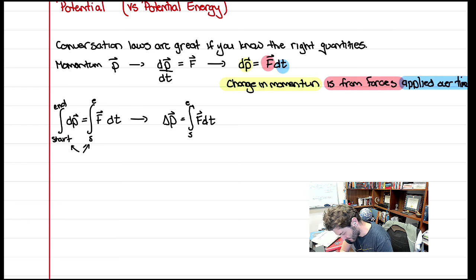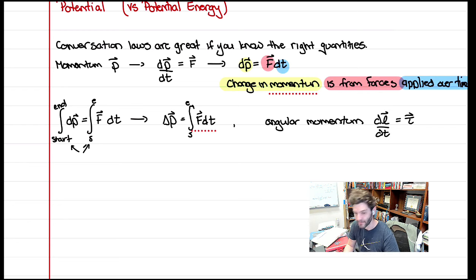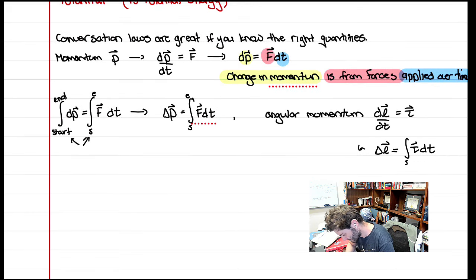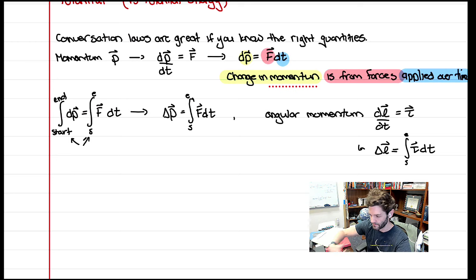Similarly, angular momentum follows the same framework. The change in angular momentum equals torques, so the bulk change in angular momentum occurs because of torques applied over time, from some start to end. How do you change an object's angular momentum? You apply a torque over some expanse of time — it could be an impulse where you smack the thing, or a constant force field.